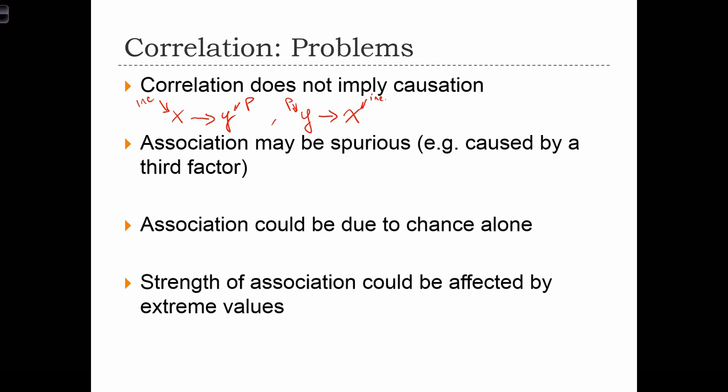Another problem with correlation is that the association between two variables might be spurious. Imagine we have a variable x, which is the number of churches in a town, and we have a variable y, which is the number of bars in a town. If I gave you these two variables and asked you to compute a correlation, I bet you would find some kind of correlation at like 0.8,